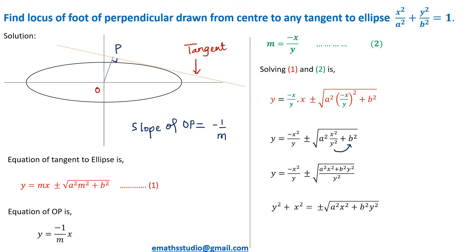Now squaring both sides — just reshuffling the terms, observe x² written first then y² — so (x² + y²)² = a²x² + b²y². This is the equation of the locus of the foot of the perpendicular drawn from the center to any tangent to the ellipse. That means this is the equation of locus of P, so our solution is done.